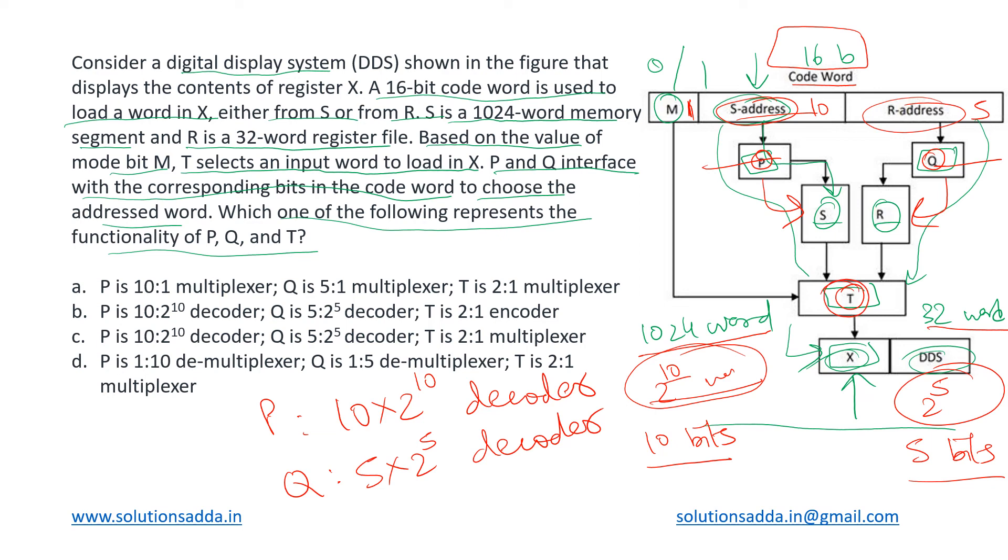It is getting two inputs, one from S and one from R, and it is producing one output. This M, this is like a signal bit which we have at the bottom. So this is acting like a multiplexer, and hence this T can be said to be a two cross one multiplexer.